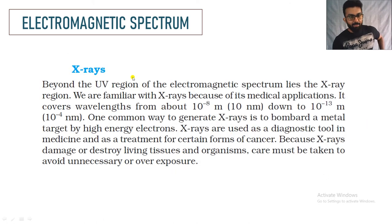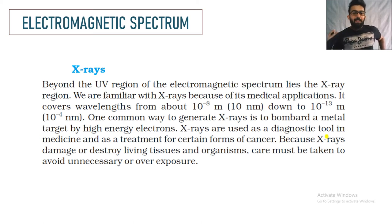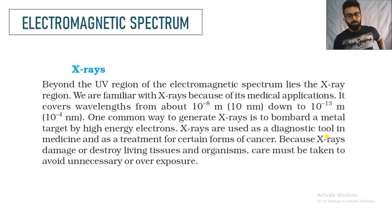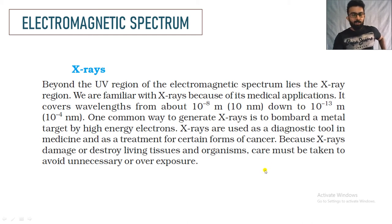X-rays lie beyond the ultraviolet region of the electromagnetic spectrum. The wavelength extends from 10⁻⁸ meter down to 10⁻¹³ meter. The most common way to produce X-rays is by hitting a metal target with fast-moving electrons. X-rays must be used carefully to avoid unnecessary or overexposure.